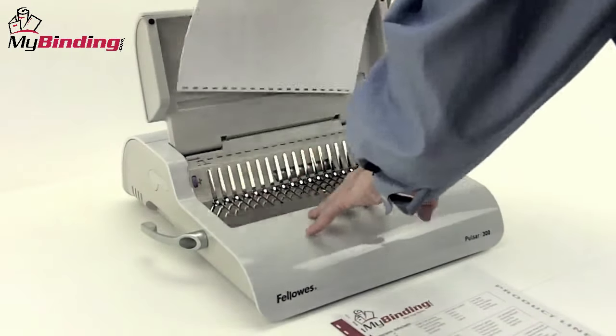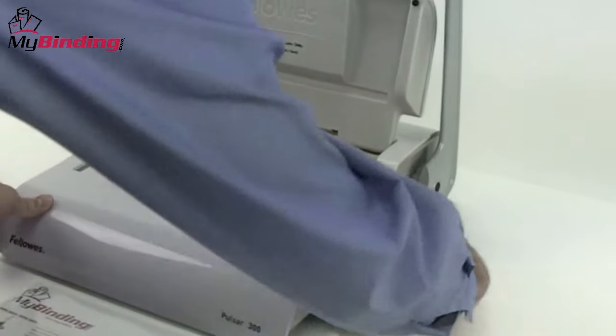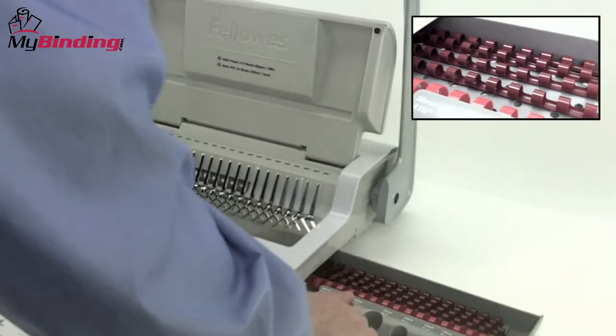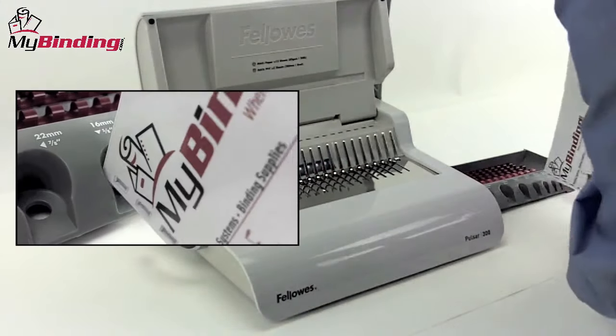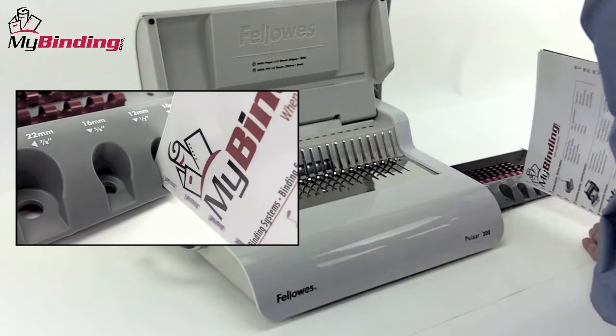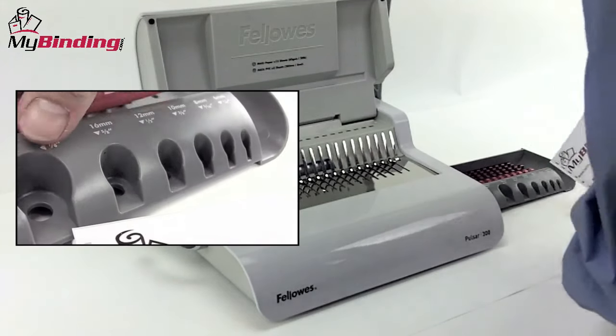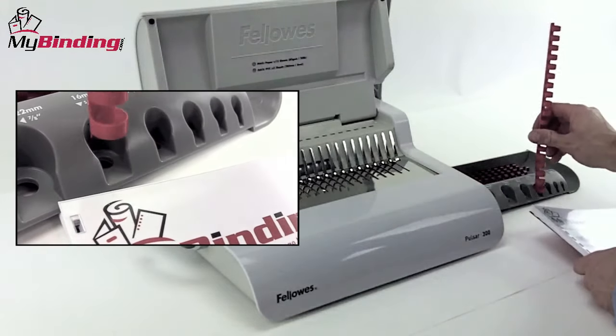Next comes the binding step. There's a slot on the side of the machine where a little drawer pulls out. There you can store some combs if you'd like, as well as use the handy measuring tool to assure that you have the correct size comb for your project. Simply place your project inside and see what you need.